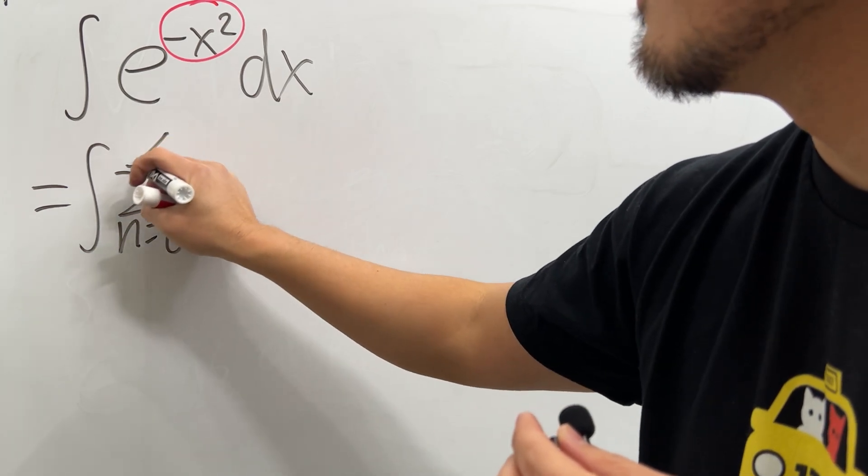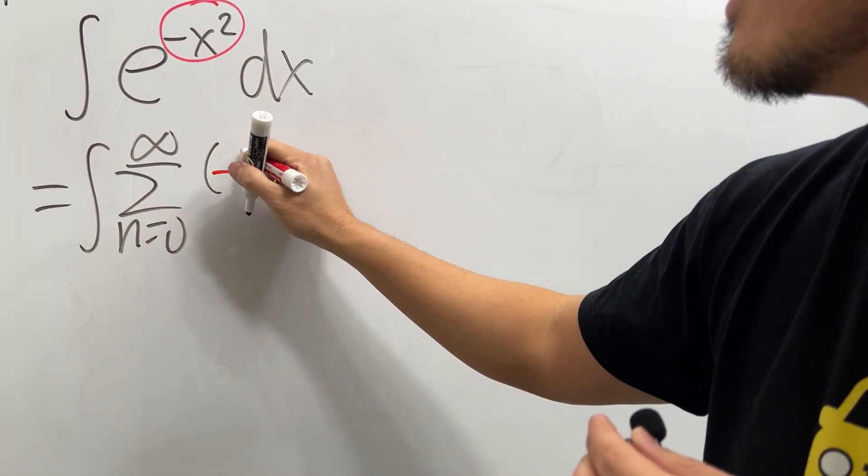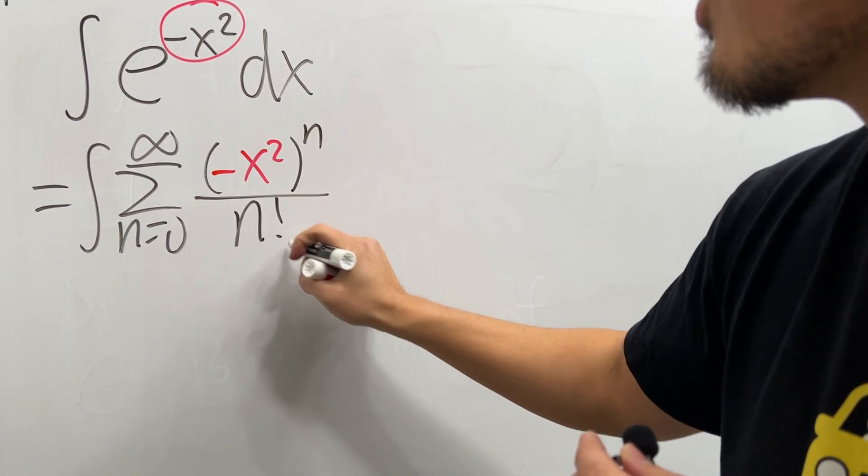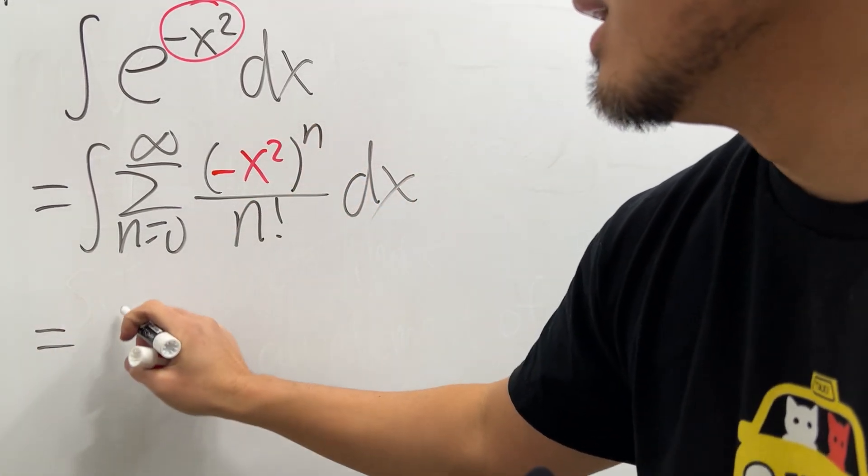n goes from zero to infinity for e to the whatever. We do the following: you put this thing right here inside, negative x squared, and then raise to the n's power and then divide it by n factorial. That's for the e, and then dx.